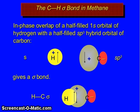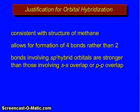Now the C-H sigma bond in methane: in-phase overlap of the half-filled 1s orbital of hydrogen with a half-filled sp³ hybrid orbital of carbon gives a sigma bond. Justification for orbital hybridization: consistent with the structure of methane, allows for formation of 4 bonds rather than 2, and bonds involving sp³ hybridized orbitals are stronger than those involving s-s overlap or p-p overlap.